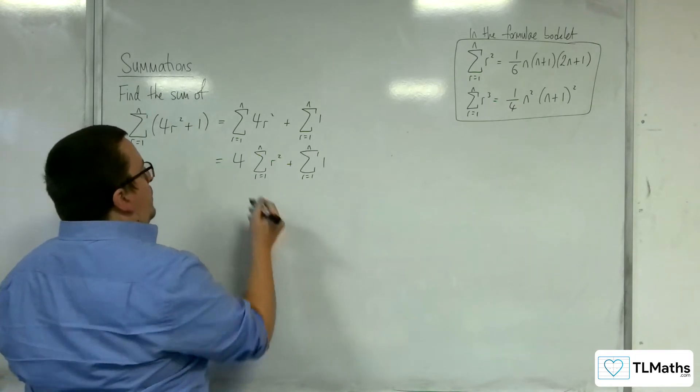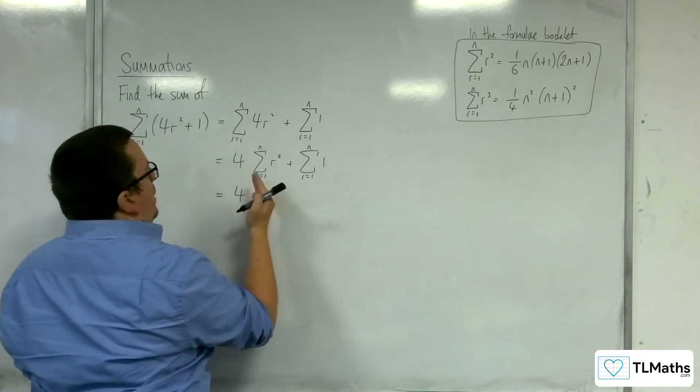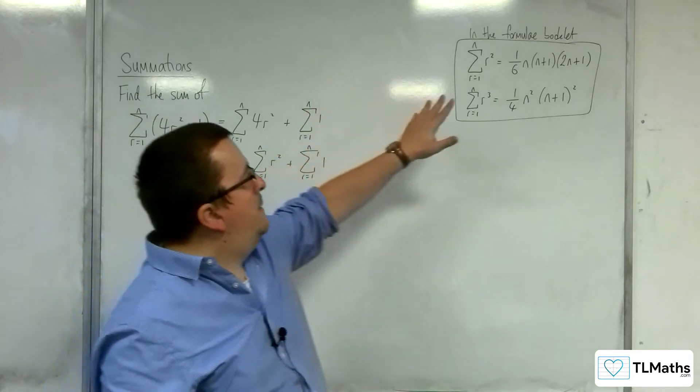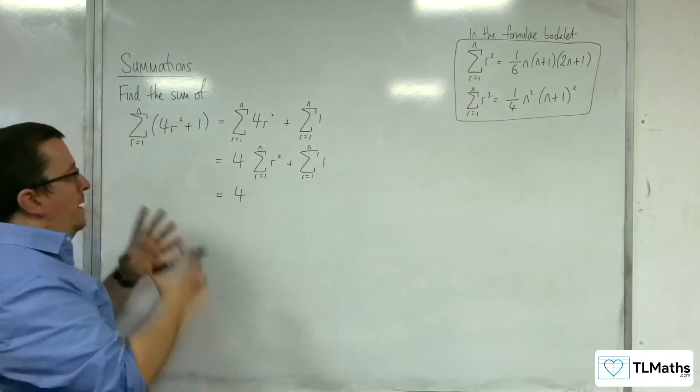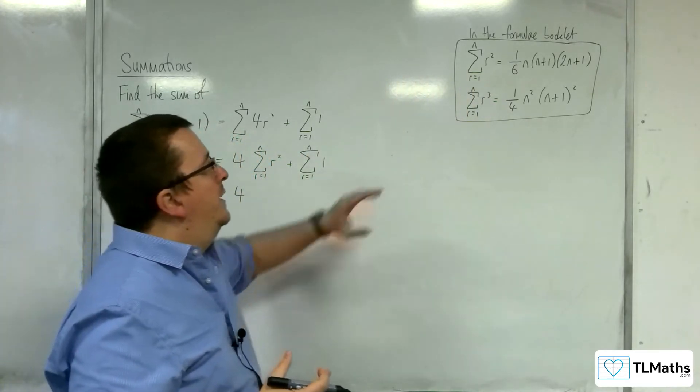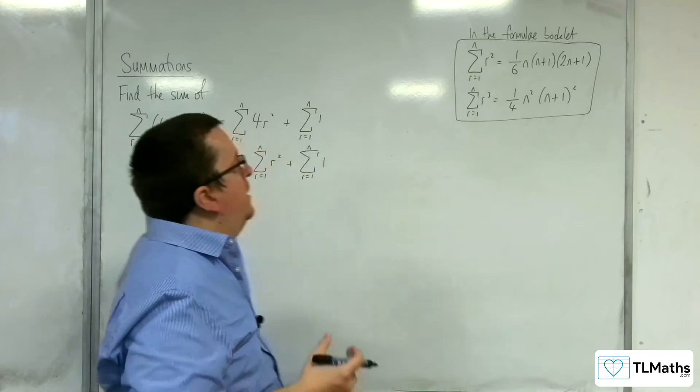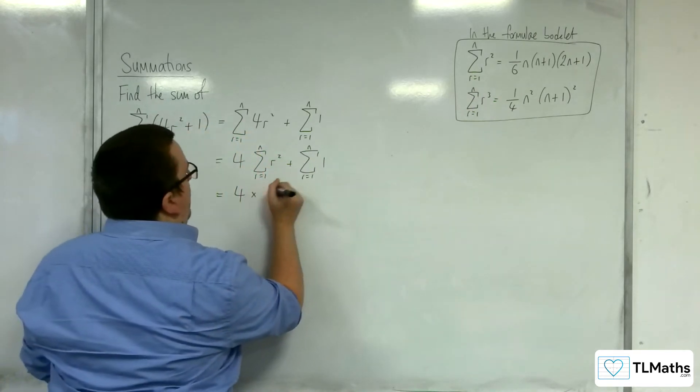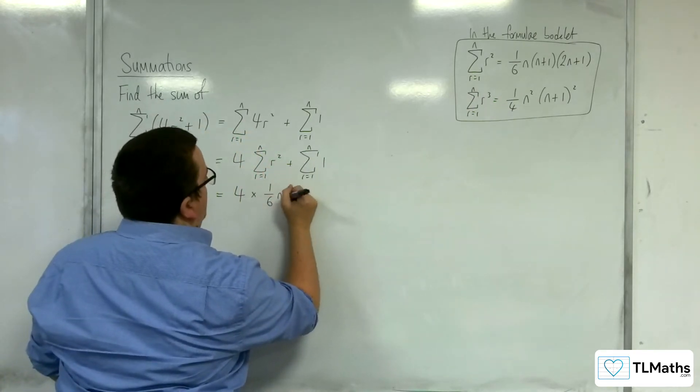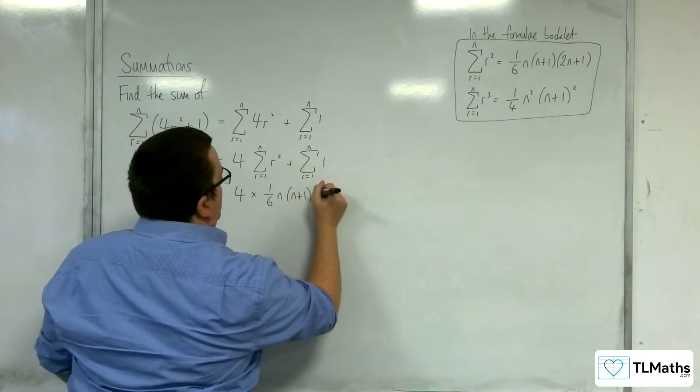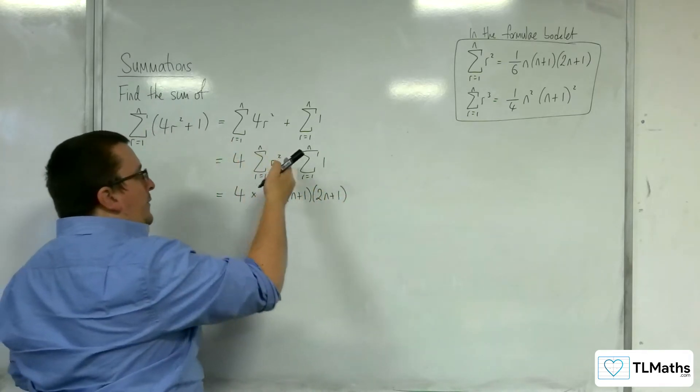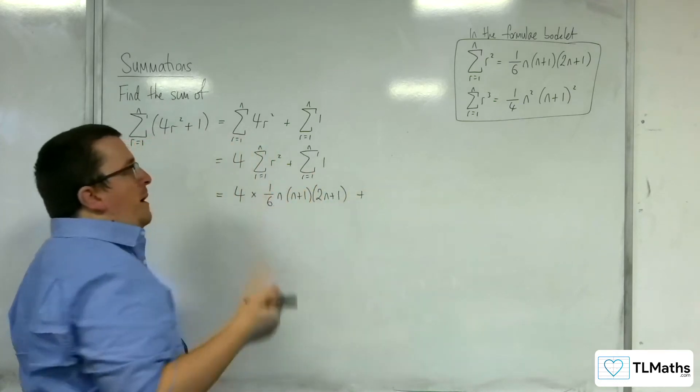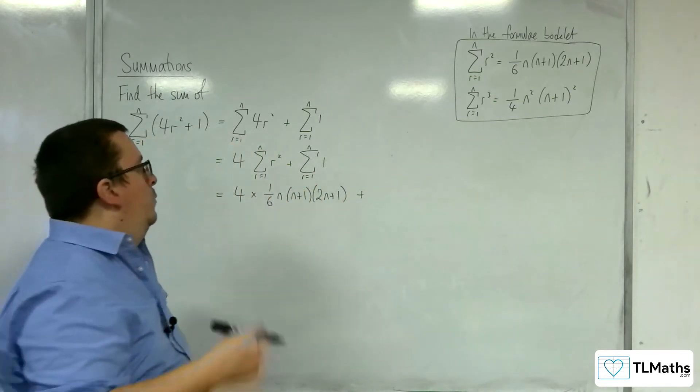So what you're left with is 4 lots of something that we know. Remember, this is what's in the formula booklet. So we can use these straight from the formula booklet without saying anything else. We can bring this straight in. So we've got 4 lots of 1 sixth n, n plus 1 times 2n plus 1, plus the sum from r is 1 to n of 1, which is n.